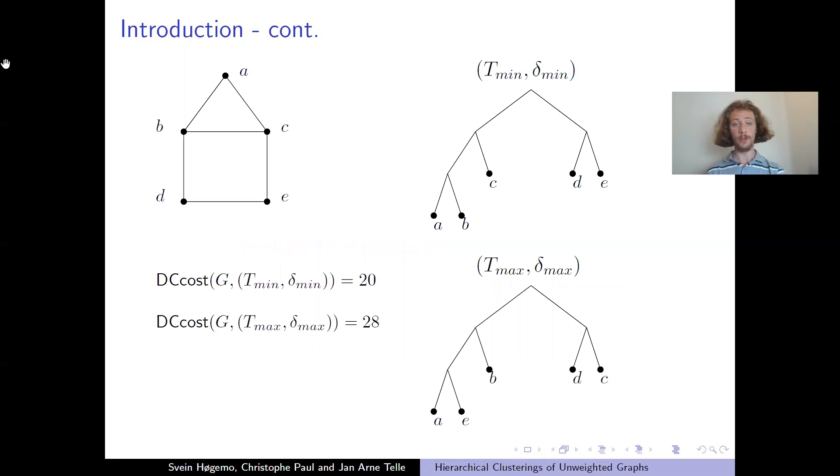Just an example here. For this house graph, we can make the clustering tree minimizing this cost, which is at the top here. It has cost 20 when you sum over all edges. And the tree at the bottom, it looks just the same, but the nodes are placed differently. And it has cost 28, which is the highest possible.